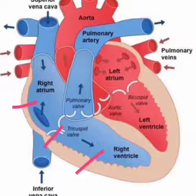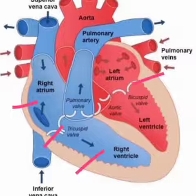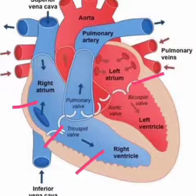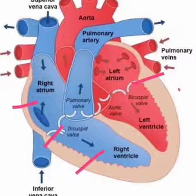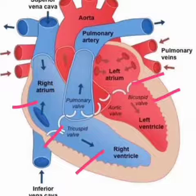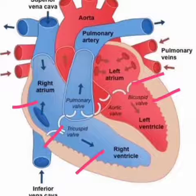The function of the tricuspid valve is to prevent the backward flow of blood. At the junction of the left atrium and left ventricle, another valve is present, which is made of only two cusps. This is known as the bicuspid valve, otherwise known as the mitral valve.